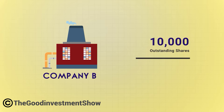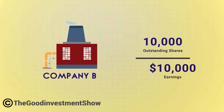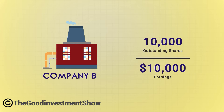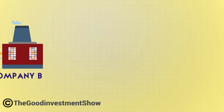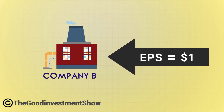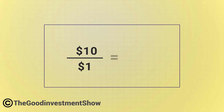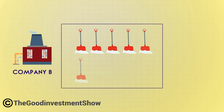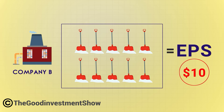Let's calculate Company B's P-to-E ratio. It has 10,000 outstanding shares and $10,000 in earnings, resulting in an EPS of $1. The stock is $10 per share, which means Company B is trading at 10 times its earnings, or has a P-to-E ratio of 10.